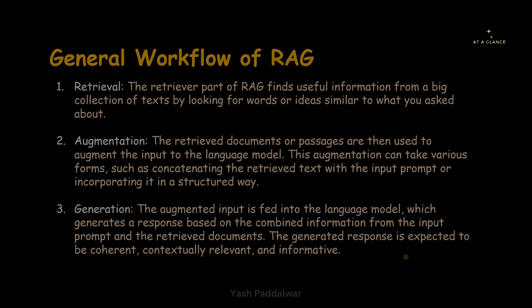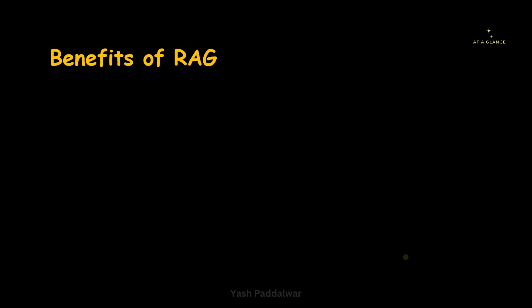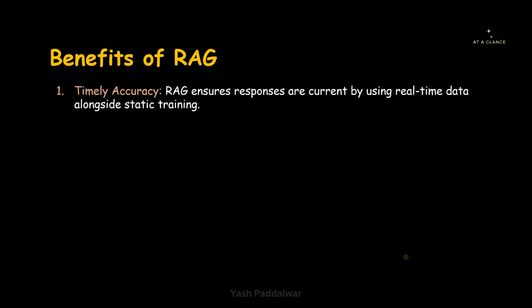Now we will look into the benefits of RAG. The first benefit is timely accuracy. RAG ensures responses are current by using real-time data alongside static training. If we use direct large language models, they may not provide real-time information because they are pre-trained on static data that might not be updated. But in RAG, we are providing real-time data, and that is why it ensures responses are current and updated.